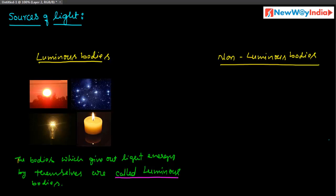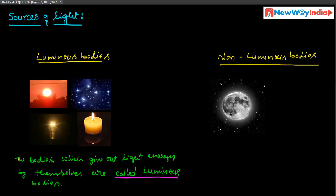Next, what are the non-luminous bodies? Those bodies which do not give light energy of their own are called non-luminous bodies. Consider the Moon — it is a non-luminous body because it doesn't give light by its own; it reflects the sunlight. Moon's light is reflective light, and the Moon doesn't give light by its own.